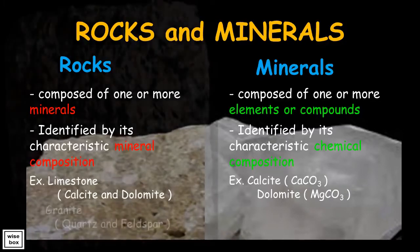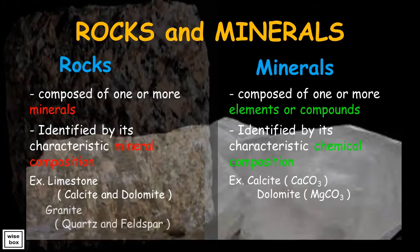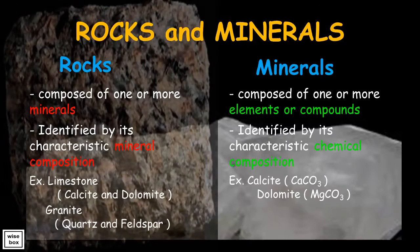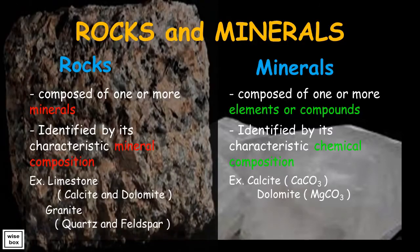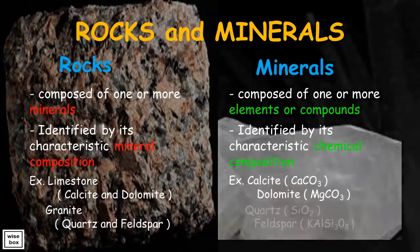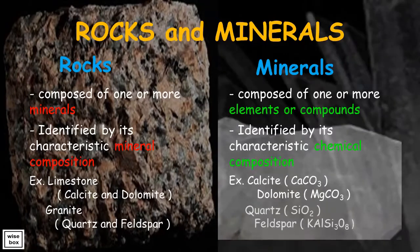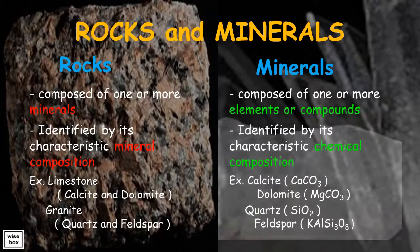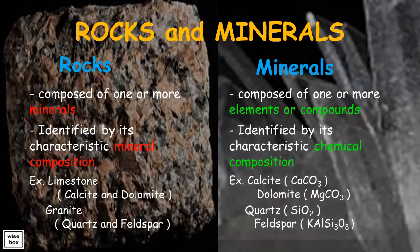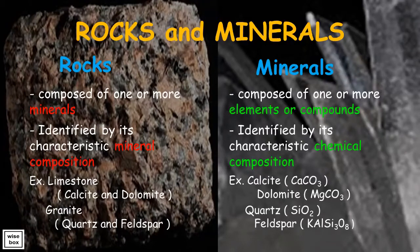Another example: granite is also a rock made of minerals quartz and feldspar. The mineral quartz is composed of silicon dioxide, and the mineral feldspar is composed of potassium aluminum silicate.